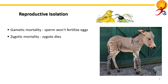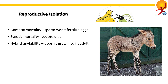Zygotic mortality is when egg and sperm have met and fused but the zygote dies without further development. Hybrid unviability is a post-zygotic barrier in which the hybrid does not mature into a healthy and fit adult. The relatively low health of these hybrids compared to pure-breed individuals prevents gene flow between species.